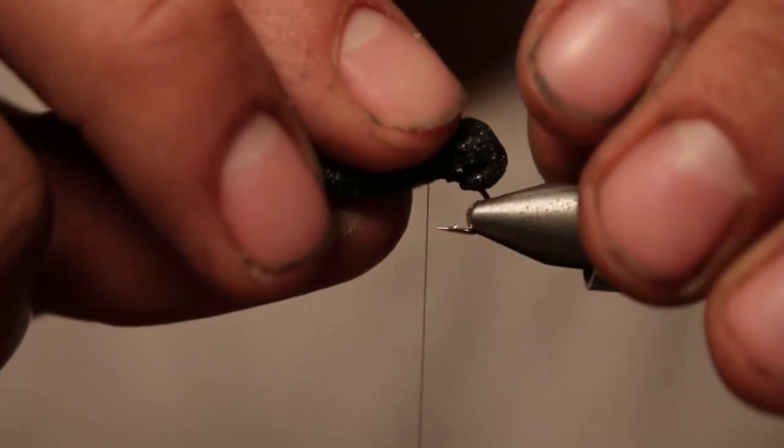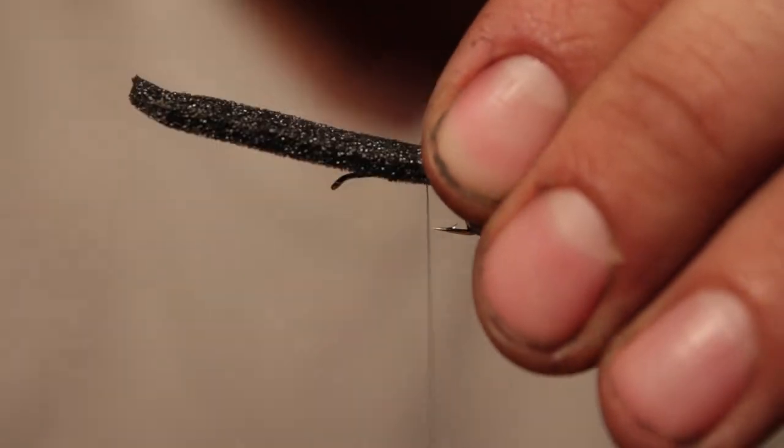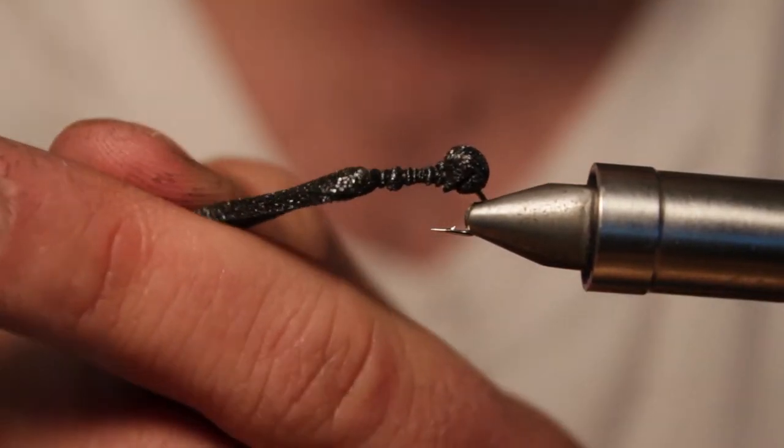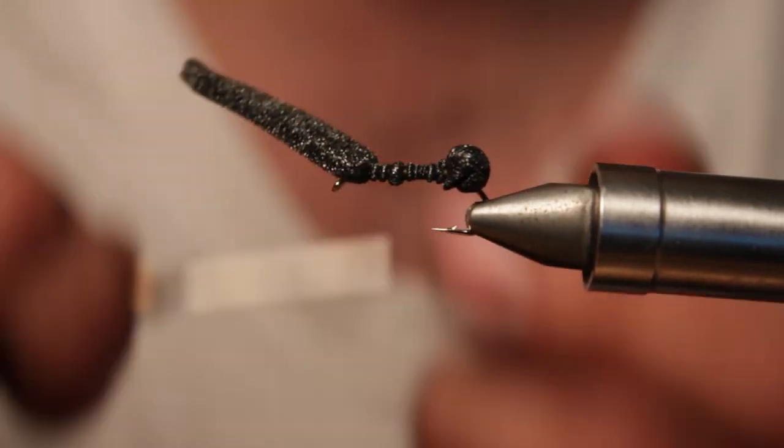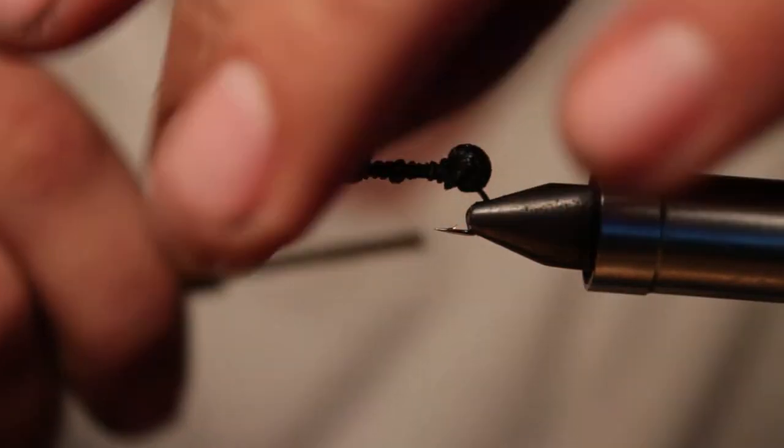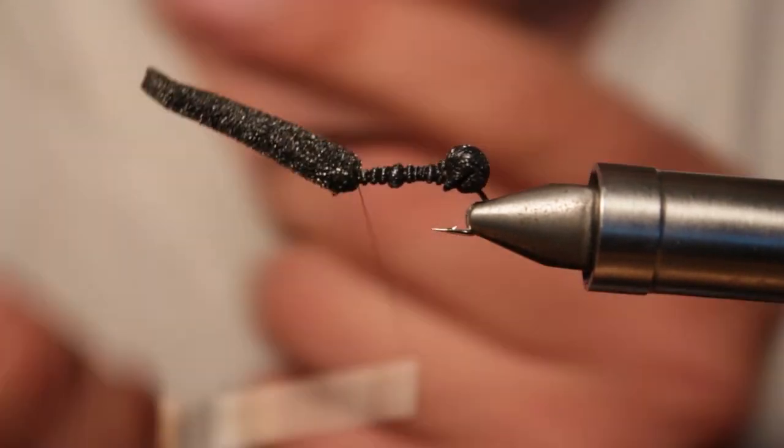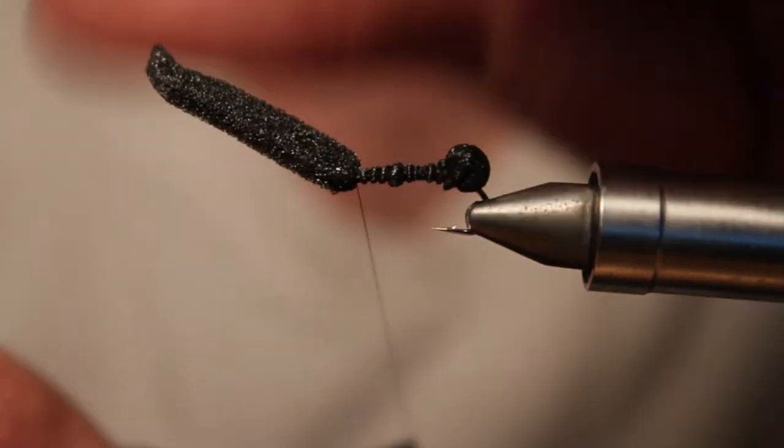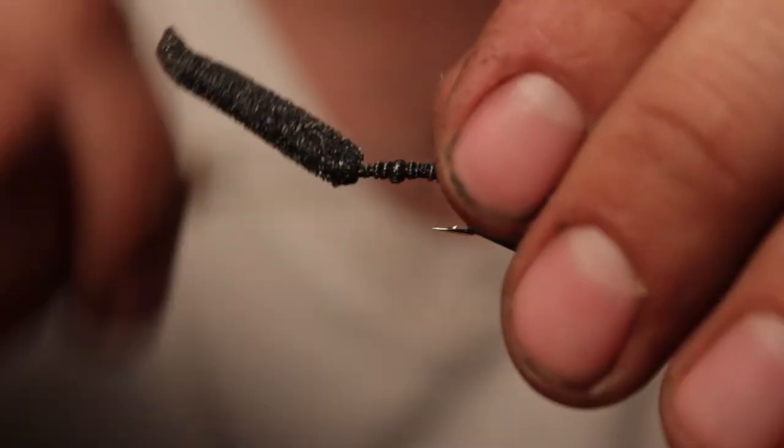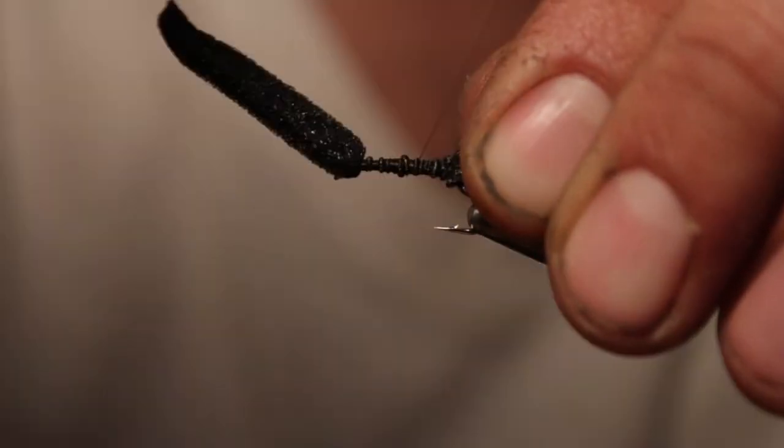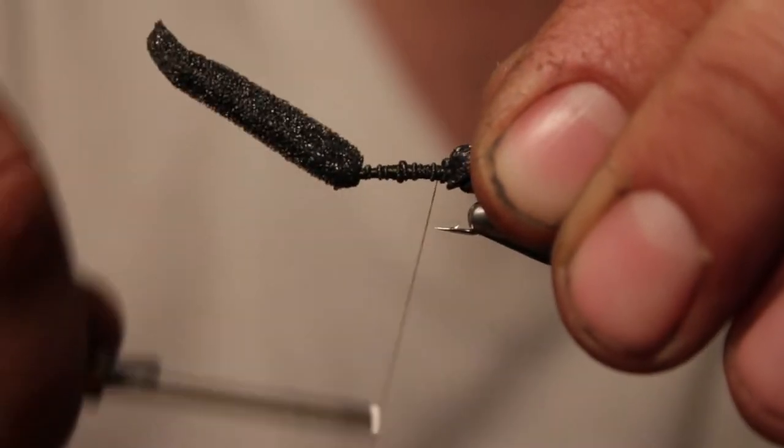We're going to double the foam over and create a little egg sac back here. So after we've created this little egg sac, you can bring your foam up towards the front of the hook, basically to your hook eye, and we're going to let the rest of this foam just kind of dangle out in front for now. Then you can go back over your pattern here, or back over your foam, make it nice and collapsed.